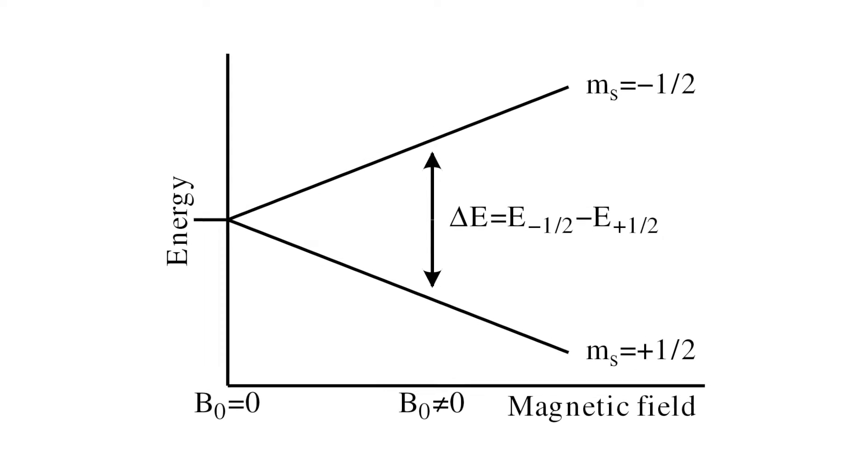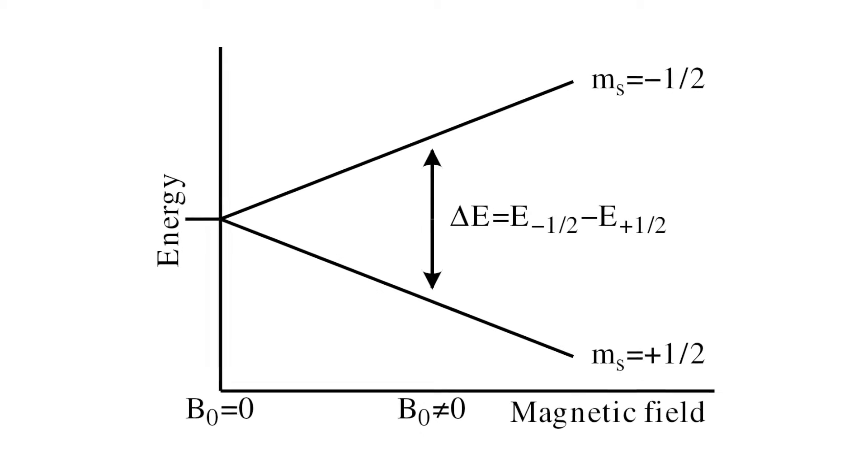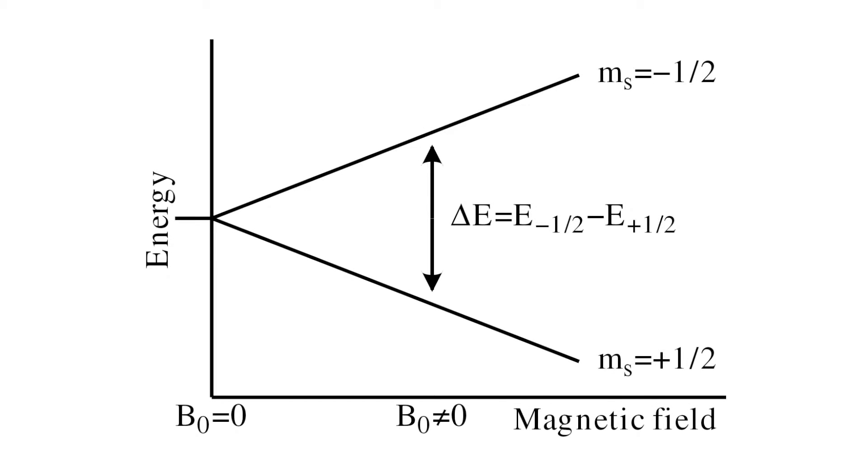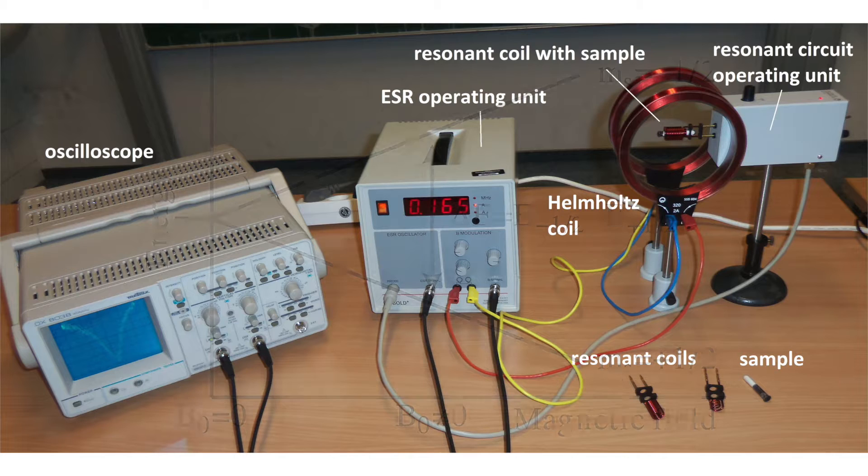In ESR, the energy states of atoms are used in which the angular momentum can be neglected compared to the spin of the electron. This allows for the measurement of the Landay factor of the electron spin.